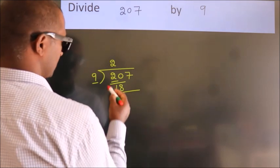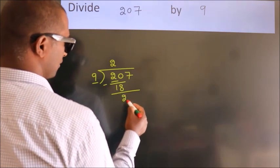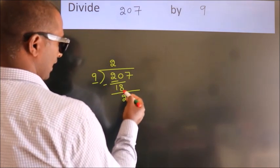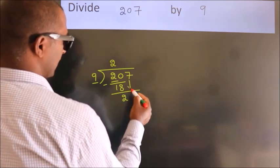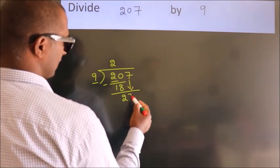Now, we should subtract. We get 2. After this, bring down the beside number. So, 7 down.